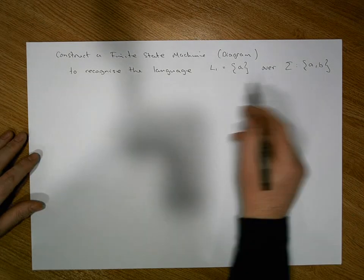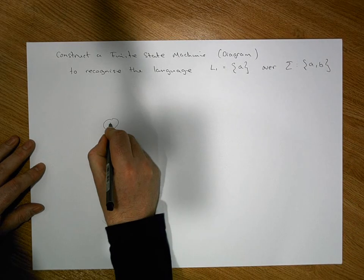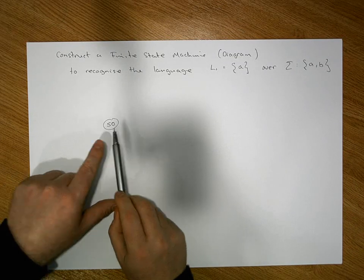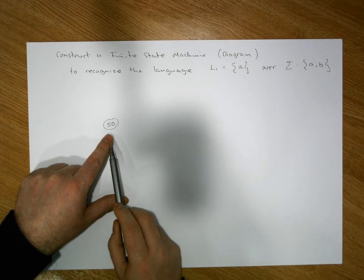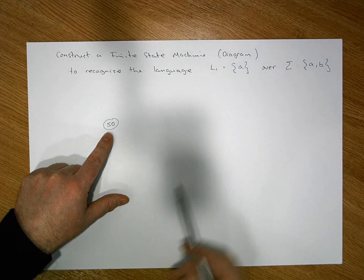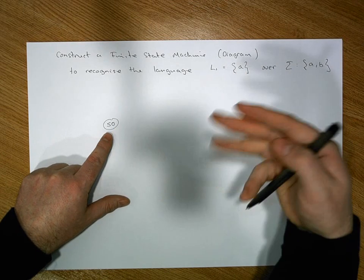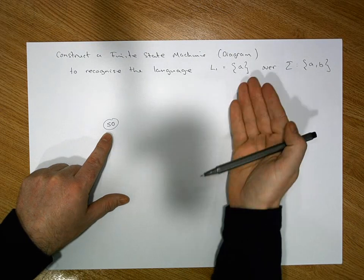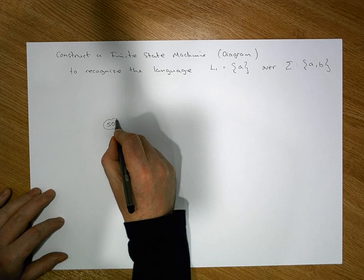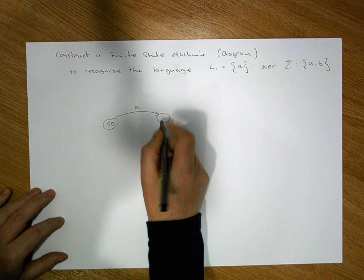So what we'll have is a number of states, and we're going to have a start state — let's symbolize that by S0. When we pass in the word A to this machine, the machine should consume the A and go to a final state, indicating that it recognizes this particular word. So passing A into this machine, it consumes the A and transitions to a final state.